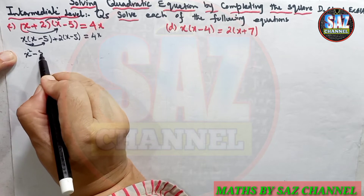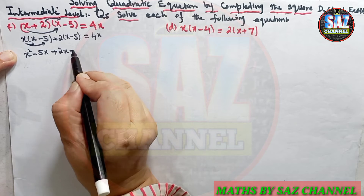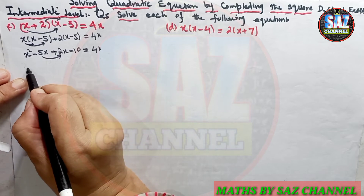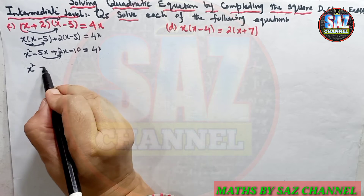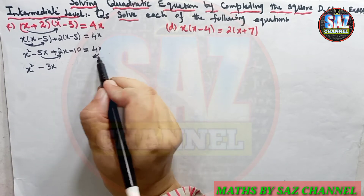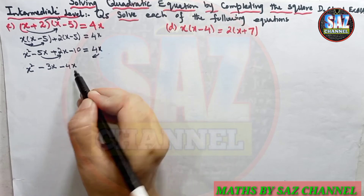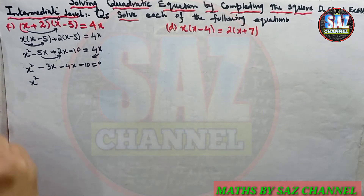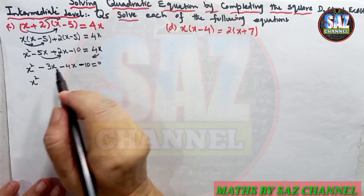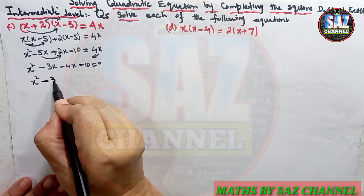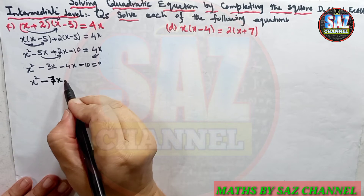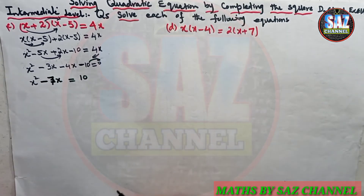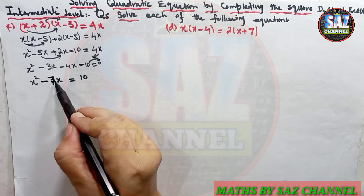Now multiply x with every term inside the bracket. The equation becomes x² − 5x + 2x − 10 = 4x. Now −5x and 2x are like terms: combining them gives −3x. I also have to shift 4x to the other side, giving −3x − 4x − 10 = 0. Combining −3x and −4x gives −7x, so the equation is x² − 7x − 10 = 0. I shift −10 to the other side to apply the method of completing the square: x² − 7x = 10.